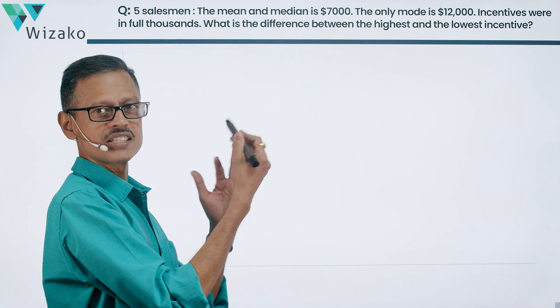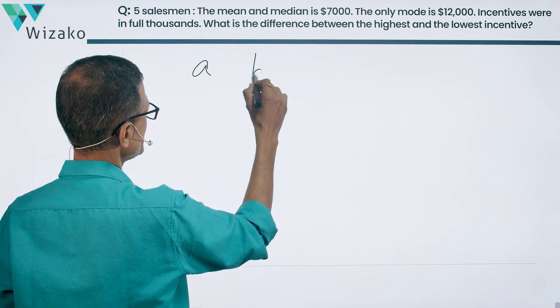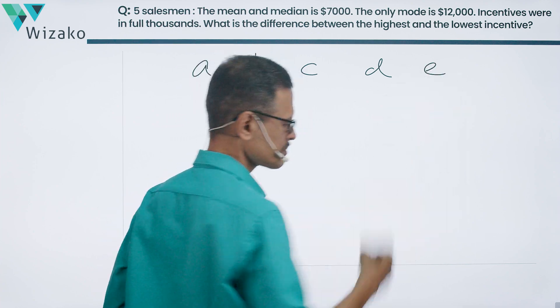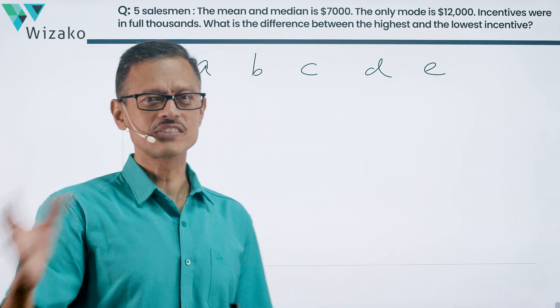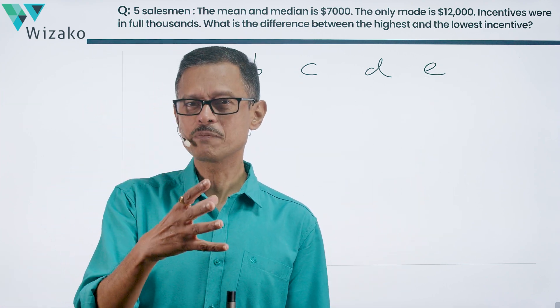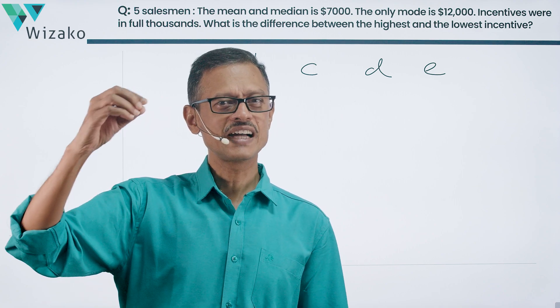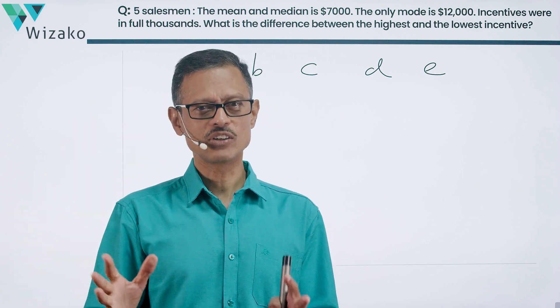Let's say the salesman incentives received are A, B, C, D, E. And let's say this is the ascending order of the incentives. The lowest incentive paid in this month is A dollars. The highest incentive paid in this month is E dollars.